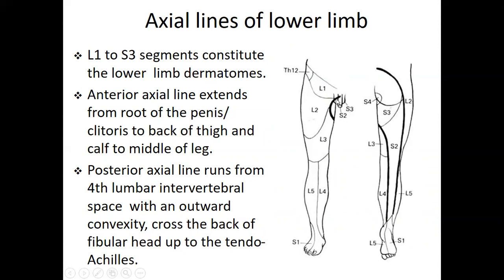The anterior axial line of the lower limb extends from the root of the penis (for male) or clitoris (for female) to the back of the thigh, and from the calf to the middle of the leg. The posterior axial line runs from the fourth lumbar intervertebral space with outward convexity, crossing the back of the fibular head to the tendon axis.